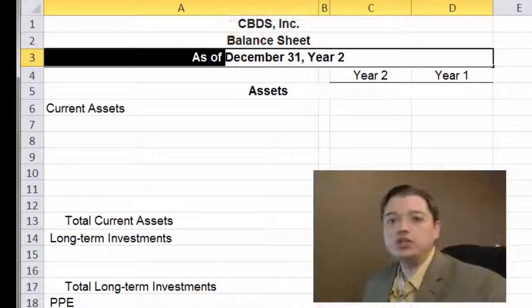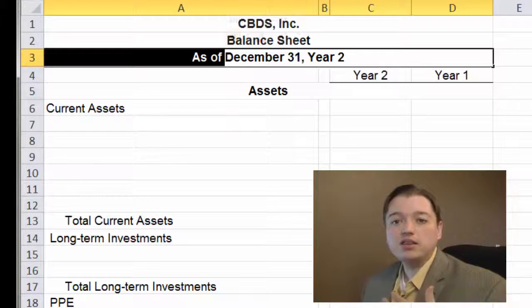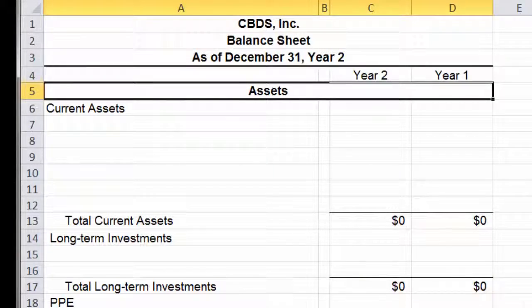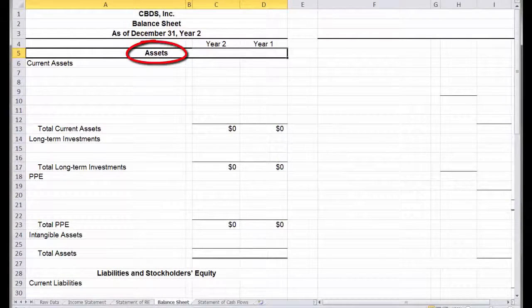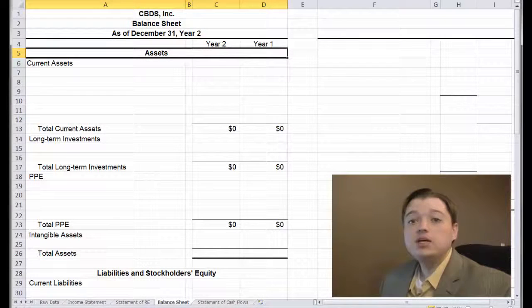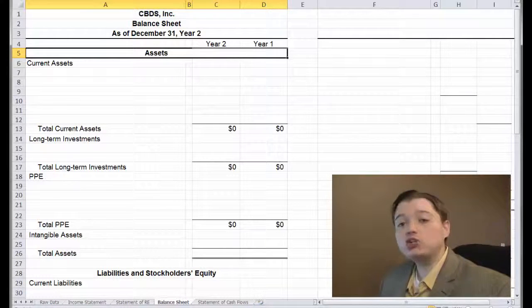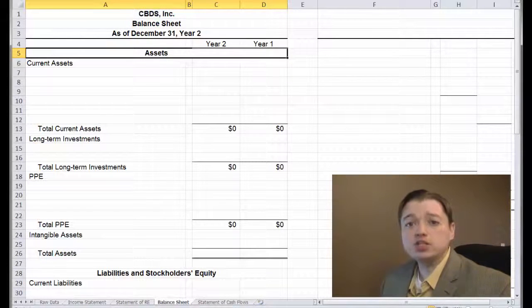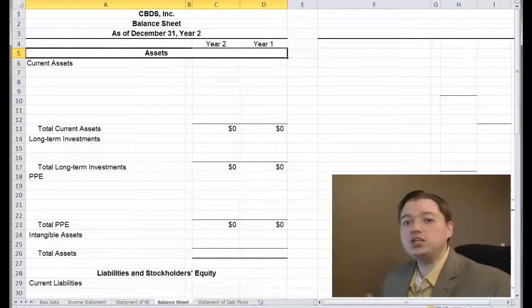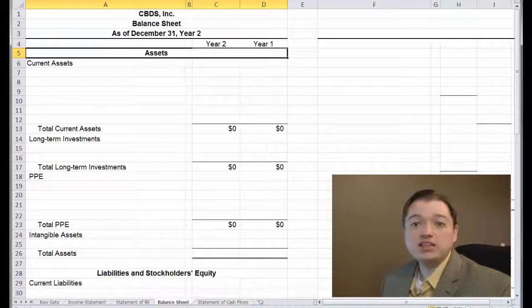Before we go any further, I do want to mention the correct format of a balance sheet is one of our key concepts. You can see that I've put in two years' worth of data. Now this is not required by GAAP to include previous years, but it is required by the SEC for publicly traded companies. It's also required by a lot of companies who want to do comparisons of your financials. The other reason that we need it is because it helps us create the statement of cash flows.